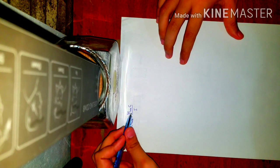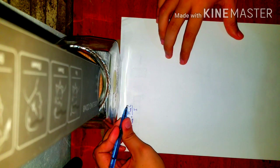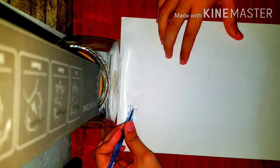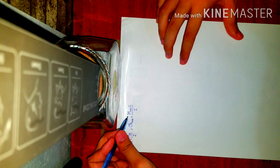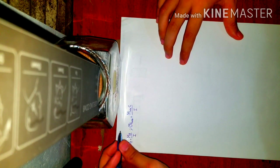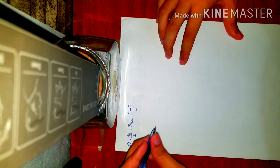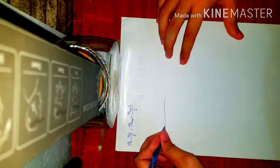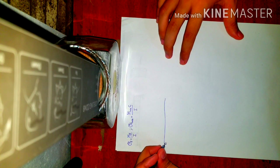Let's discuss each variable in the equation. M is the moment. For example, consider a simply supported beam supporting a uniform load.